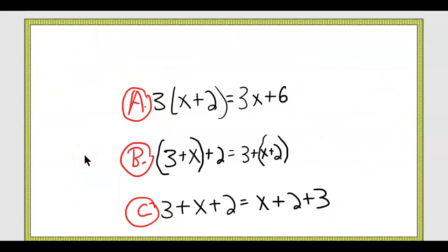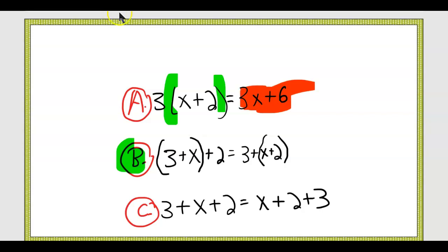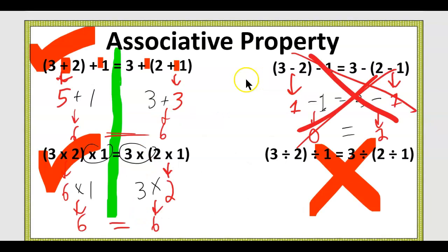Which one of these would be the associative property? Pause the video if you need to. Did you say B? Yes, it's B. How do you know? It could be A — there are parentheses in A — but it needs parentheses on both sides. There are no parentheses on this side of the equation. So that's not it — that's something we haven't learned about yet. So that is not the associative property.